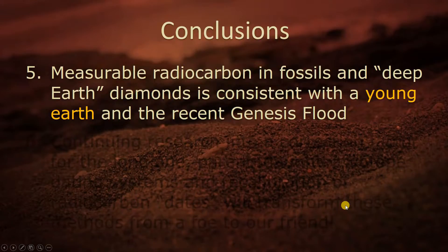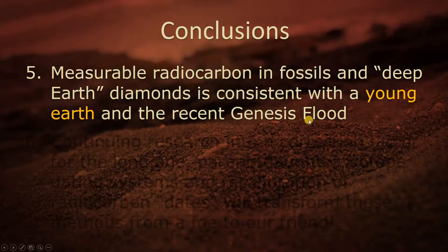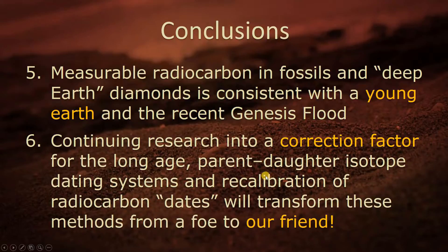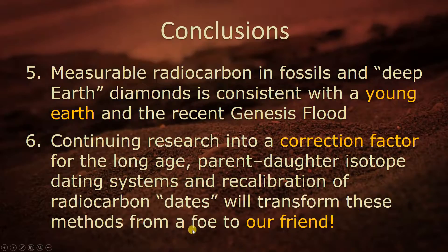Conclusion five: measurable radiocarbon in fossils and deep-earth diamonds is consistent with a young Earth and the recent Genesis flood — finding carbon-14 in the diamonds designates a young Earth. Continuing research into the correction factor for long-age parent-daughter isotope dating systems and the recalibration of radiocarbon dates will transform these methods from a foe to our friend.